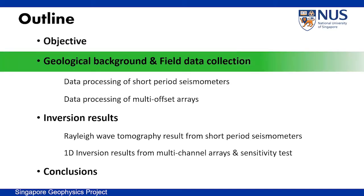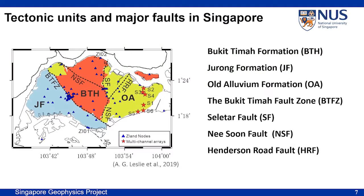Singapore Island is composed of three distinct geological formations. The first is the Jurong formation in the south and southwest, the Bukit Timah formation in the central part, and the old alluvium formation of quaternary sediments in the east. An area of faults and fractures are developed in Singapore, and they control bedrock unit distribution. The Bukit Timah fault is the significant fault that separates the Jurong formation and the Bukit Timah formation. The depth to bedrock is believed to be 50 meters or less for the Jurong and Bukit Timah formations, and 100 meters or more in the old alluvium formation.